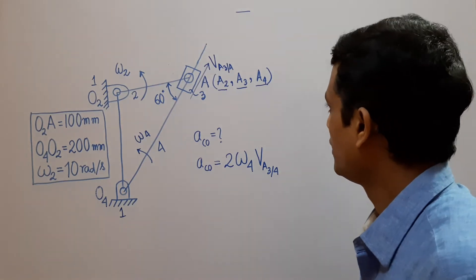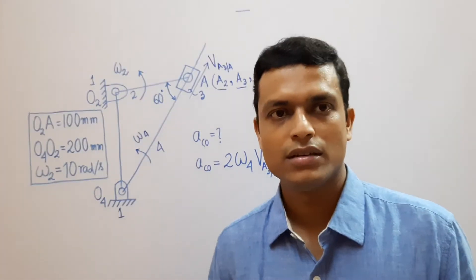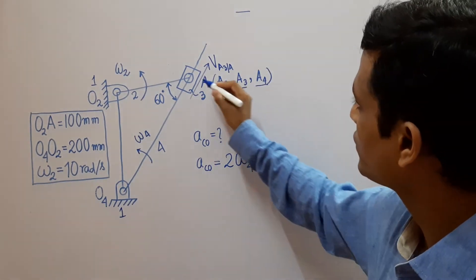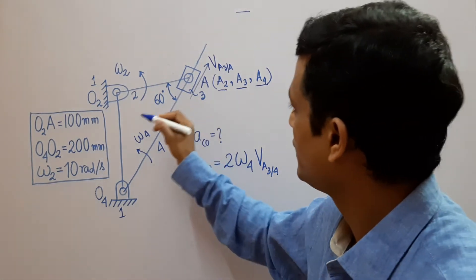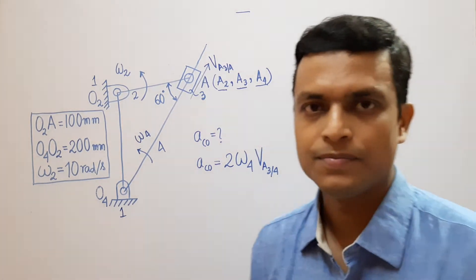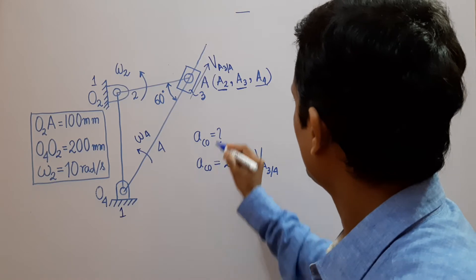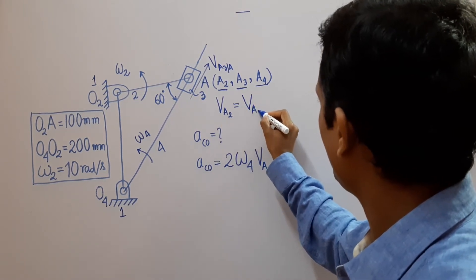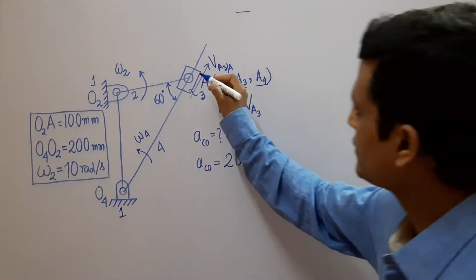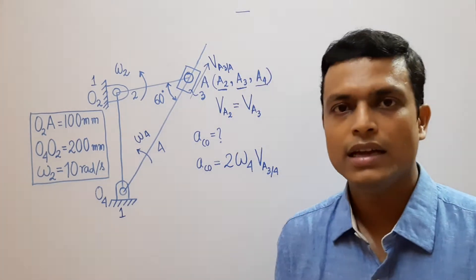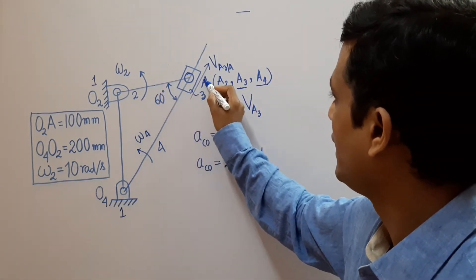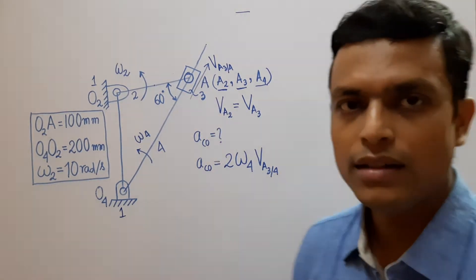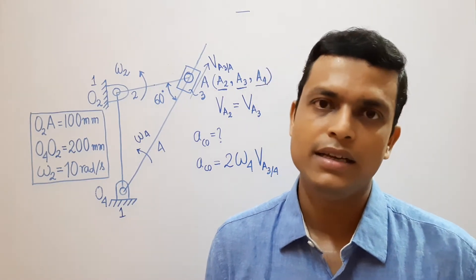Out of these three, A2 and A3 always remain coincident throughout the full 360-degree crank motion. But A4 is coincident only at this instant — as the crank moves, A4 shifts from A2 and A3. Since A2 and A3 always remain coincident, the velocity of link 2 at point A always equals the velocity of link 3 at point A. Point A is nothing but the relative instantaneous center between links 2 and 3, because it is the center of the revolute joint where link 2 and link 3 have the same velocity.